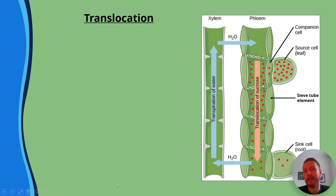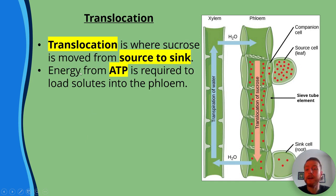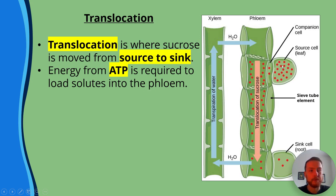Translocation is where sucrose is moved from source to sink. Energy from ATP is required to load solutes into the phloem — when we transport the sucrose into the phloem, we call that loading.